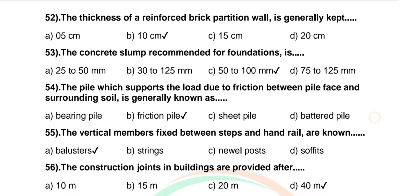Question 54: The pile which supports the load due to friction between pile face and surrounding soil is generally known as — options: bearing pile, friction pile, sheet pile, battered pile. Correct answer: friction pile. Question 55: The vertical members fixed between steps and handrail are known as — options: balusters, strings, newels, soffits. Correct answer: balusters.